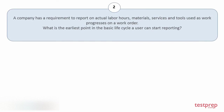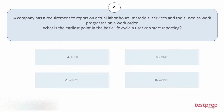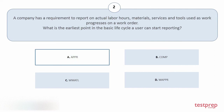Question number 2: A company has a requirement to report on actual labor hours, materials, services, and tools used as work progresses on a work order. What is the earliest point in the basic life cycle a user can start reporting? Your options are: a) APPR, b) COMP, c) WMATL, d) WAPPR. The correct answer is option a.